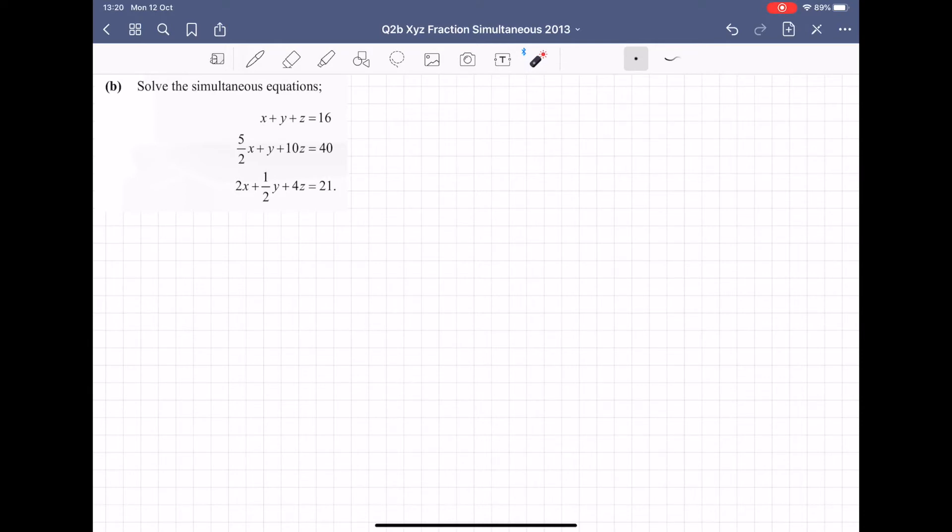But the first task I'm going to do in this question, I'm going to label the equations 1, 2, 3, that's just for convenience. And I'm going to get rid of the fractions because it's always easier to work with whole numbers than it is fractions. The first one is already whole numbers, so I don't need to do much with that.